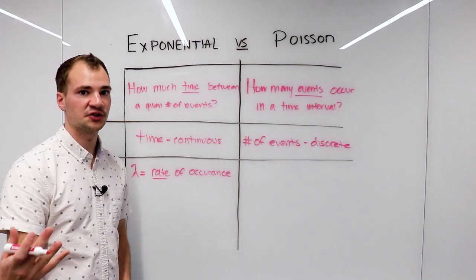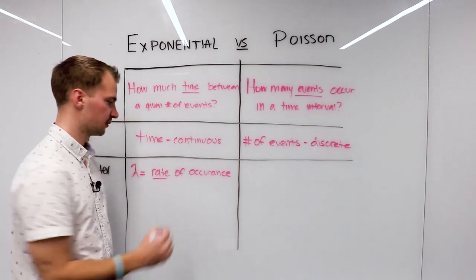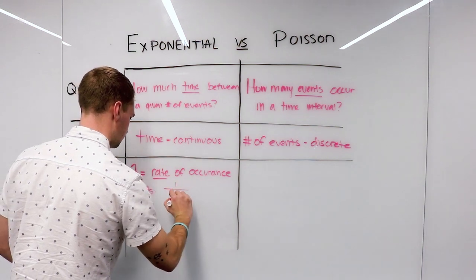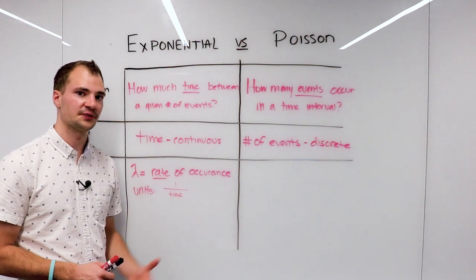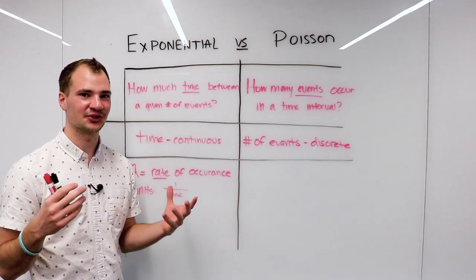Now for the Poisson, we're also going to use lambda, but it's going to represent something different. And so this is why it can be tricky to keep the two straight.